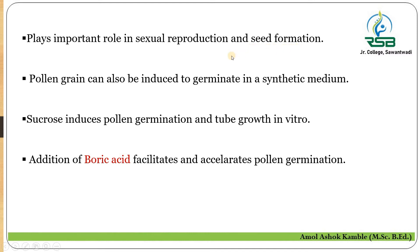This pollen-pistil interaction allows us to artificially germinate pollen grains — by using a synthetic medium with sucrose, which helps form the pollen tube in vitro. Adding boric acid also helps to accelerate the pollen germination mechanism.